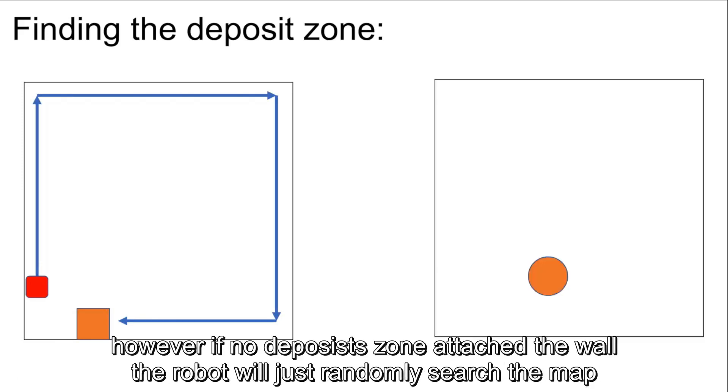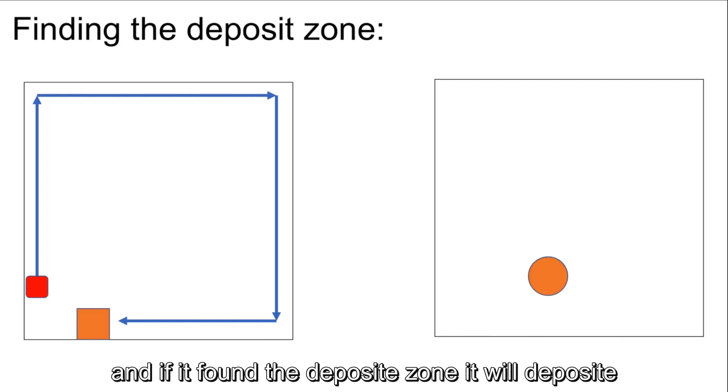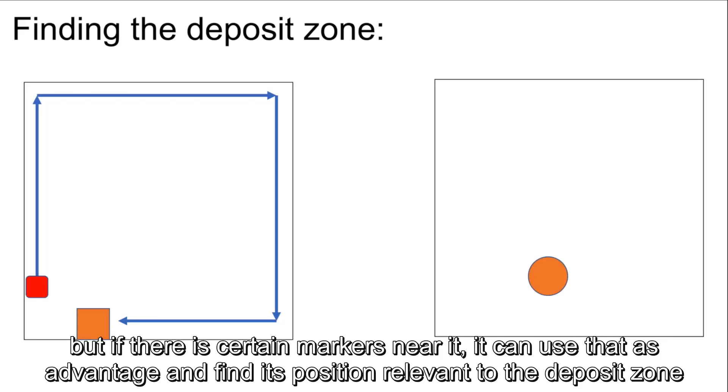However, if there are no deposit zones attached to the wall, the robot will just randomly search the map, and if it found the deposit zone, it will deposit. But if there's certain markers near it, it can use that to its advantage and find its position relative to the deposit zone.